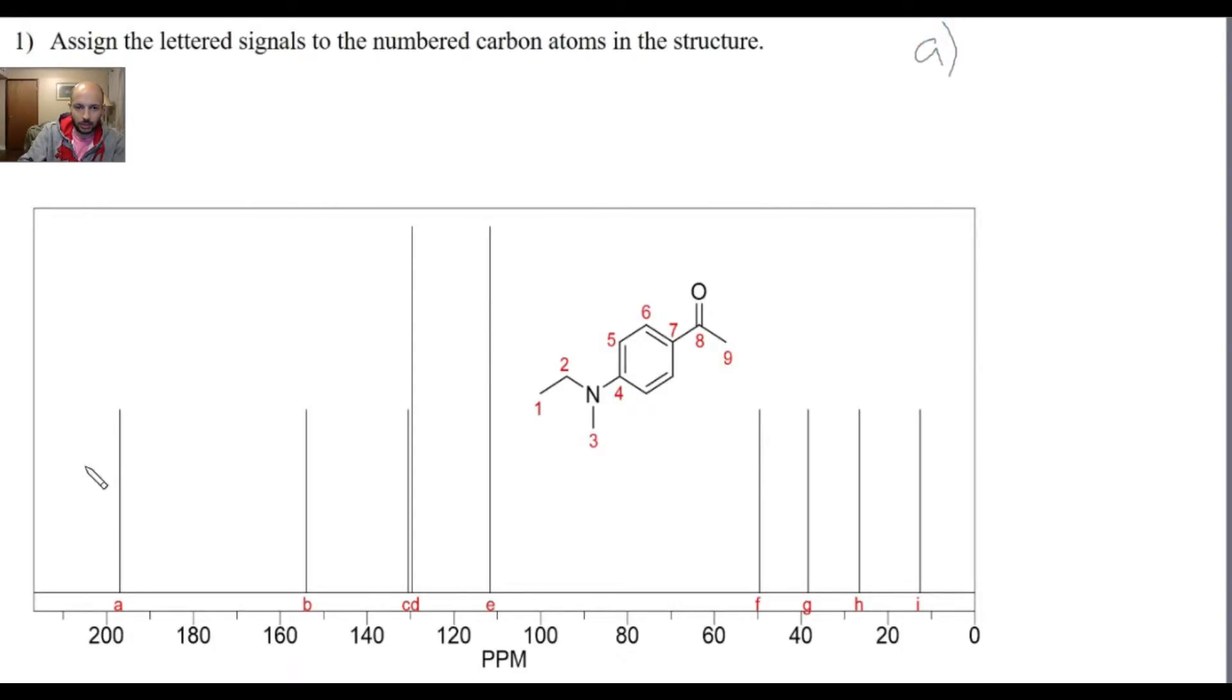Peak A is right over here, it's the most deshielded carbon, which means it has the least electron density on it. What you want to notice here is in our molecule we have two relatively electronegative atoms. We have the oxygen and the nitrogen. The oxygen is a lot more electronegative than the nitrogen because it's the second most electronegative element in the periodic table, as well as it being an sp2 oxygen.